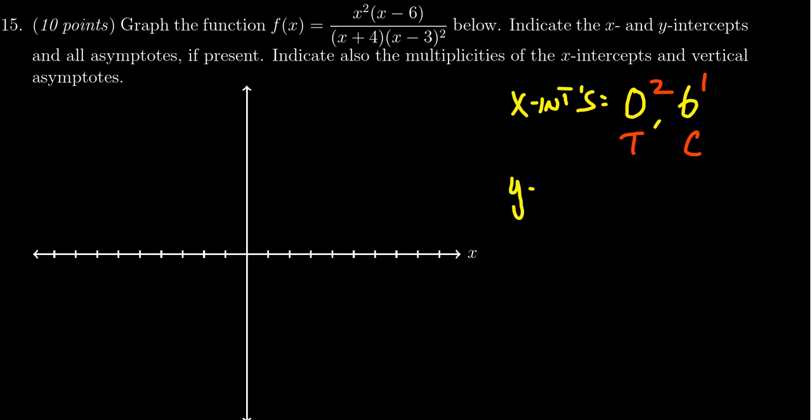To find the y-intercept, there's only the one. That happens when x equals 0. So we plug 0 into the formula there. You're going to end up with 0 squared times negative 6 all over 4 times negative 3 squared. This just turns out to be 0. So let's label what we discovered so far. So 0, 0 was an x-intercept and a y-intercept. And then we had x equals 6 going forward here, like so.